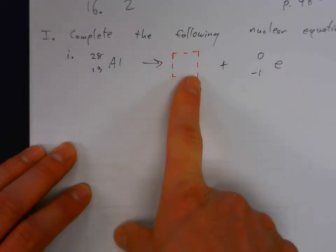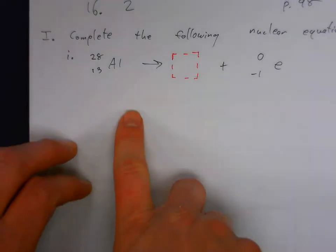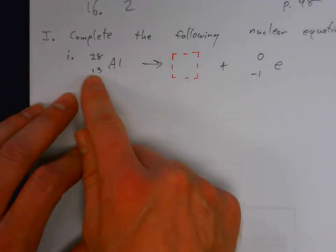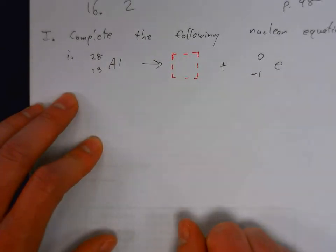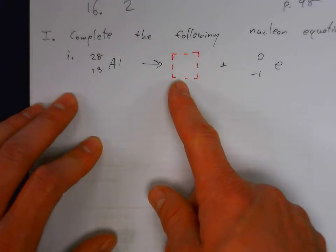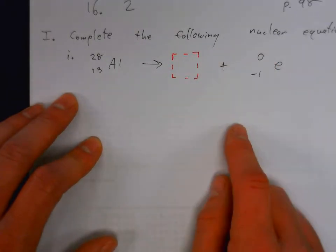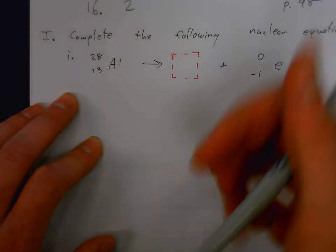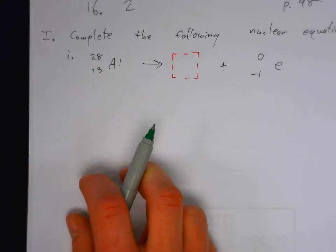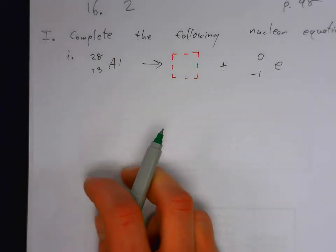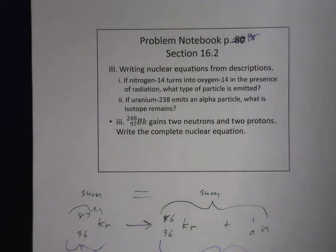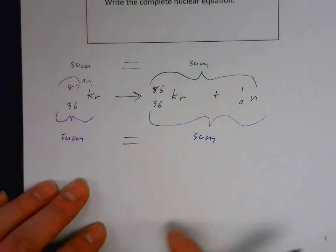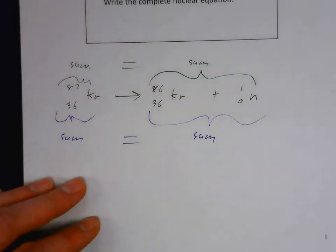We could think conceptually: beta decay occurs when a neutron turns into a proton and an electron, so we'd expect the atomic number to increase and mass number to stay the same. But another easy way to do these problems is to use algebra, since the sum on the left equals the sum on the right.